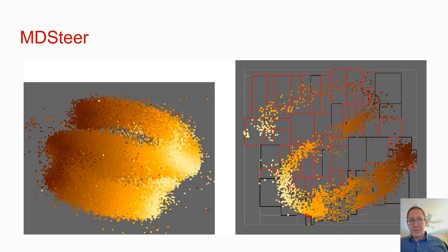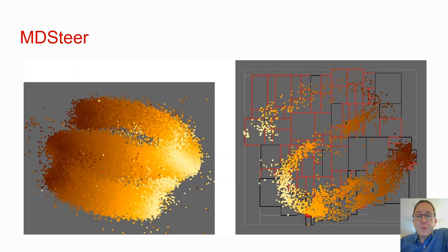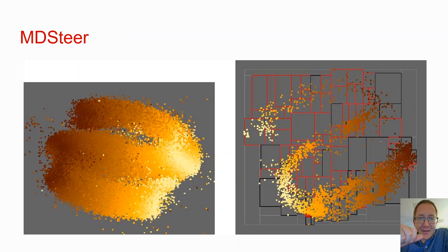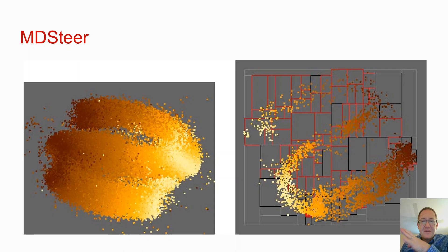MD-STIER takes really large data sets and tries to do multidimensional scaling, but that's too slow. The workaround is you can manually choose a particular subset of the data you want to look at. You select a region, and it focuses — it only does the multidimensional scaling on that region with that subset of data points. You take another chunk, do multidimensional scaling on that, and keep going like this — you as a user choose what part to focus your multidimensional scaling on. Hence it's called MD-STIER: you're steering the scaling.